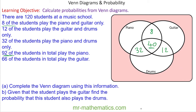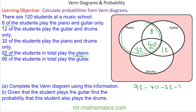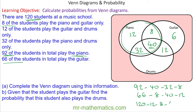92 students play piano, which means this oval must add up to 92. So that's 92 take away 40, take away 32, take away 8 — which leaves 12 people in piano only. 66 students in total play guitar. So 66 take away 8, take away 40, take away 12 — that's 6 people in guitar only. Out of a total of 120, that's 120 take away 12, take away 8, take away 6, take away 32, take away 40, take away 12 — which leaves 10 people outside the union.